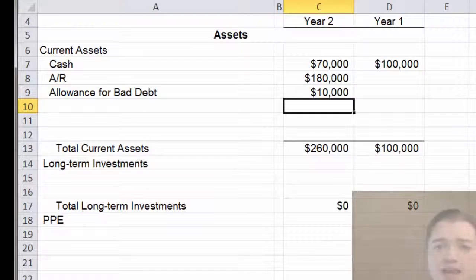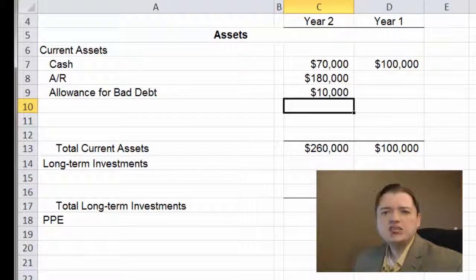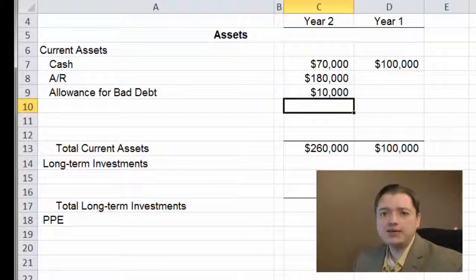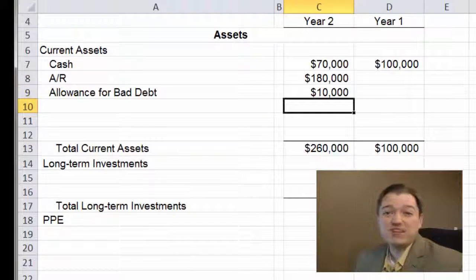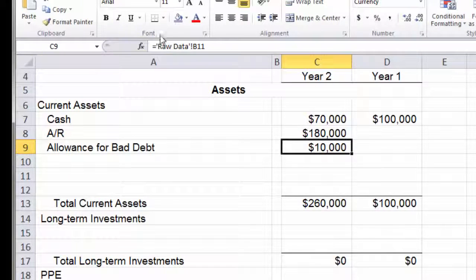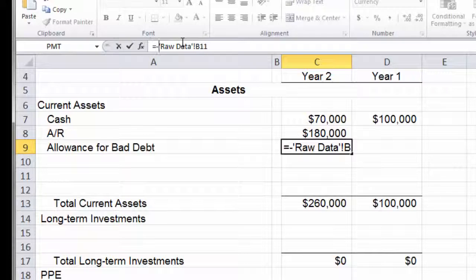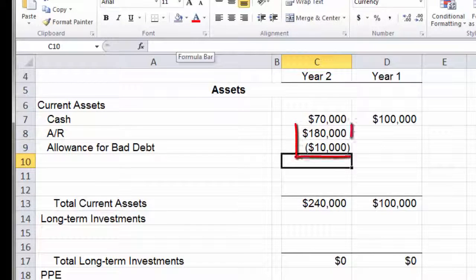Now, the one thing with the allowance for bad debt, before I copy these across and get the year one numbers, allowance for bad debt is a contra asset, which means it reduces the value of my assets. Remember, this is the stuff we think we're never going to get. So I don't want it in as a positive number. It's got a credit balance in with all these debits. So, like accumulated depreciation, it's going to show up as a negative. So I'm going to type in a negative sign here and hit enter. If I add these two up, the $180 minus the $10, I think I'll be able to collect about $170,000.